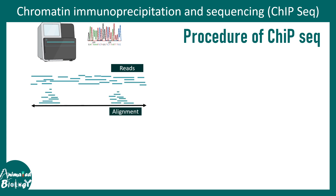These reads would be aligned with a reference genome. Essentially, these reads are significant fragments of the genome, so you take these reads and compare them with a known human or mouse genome depending on the sample being used. We align these reads with respect to the genome to ask which gene or genetic sequence is associated with this kind of protein. A peak would be called, and this peak represents the number of reads at a particular location.